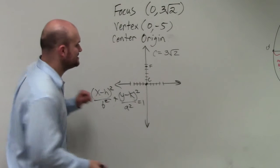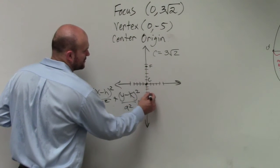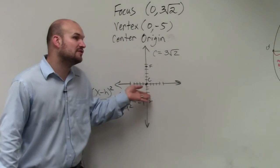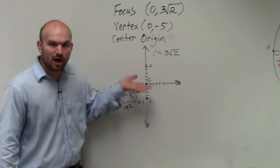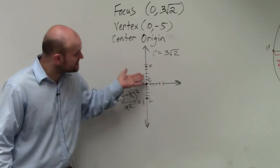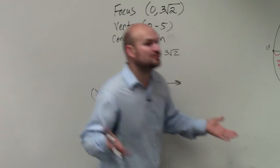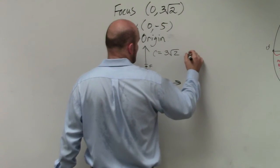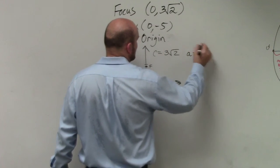And then the vertex is 0, negative 5. 1, 2, 3, 4, 5. That's my vertex. I could easily find the other vertex, Brendan, but I don't need to. All I need to know is, what is the distance from the center to the vertex? Forget about the direction. What is that distance? And the distance is 5. So we could say a is equal to 5.